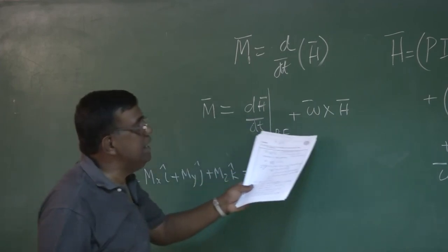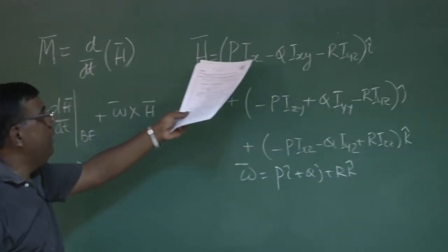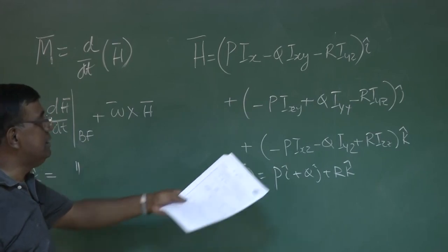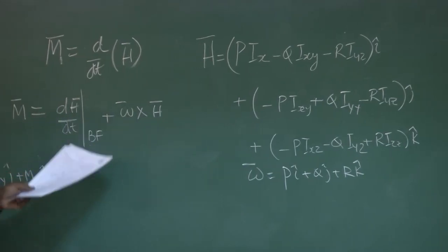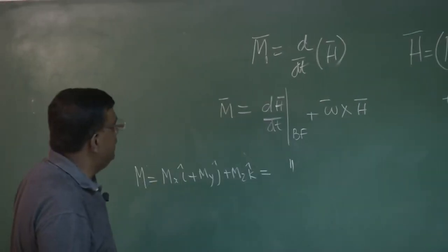So, this is the h vector, we have derived already. I have to simply put this expression here, with understanding, omega is nothing but p i + q j + r k. Do this operation and write M as mx i + my j + mz k. That is equal to this expression. That is, this right hand side you will get when you substitute for h, this i, this j and this k, omega is this, this vector operation and dh/dt like a scalar differentiation you will do and that equal to the vector M.